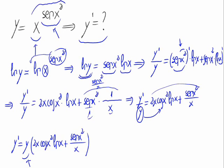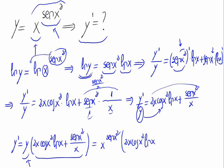To finish, we just have to substitute the expression of y. The result is x raised to the sine of x squared, times 2x times the cosine of x squared times the logarithm of x, plus the sine of x squared divided by x. This is the result of the derivative we were asked to solve.